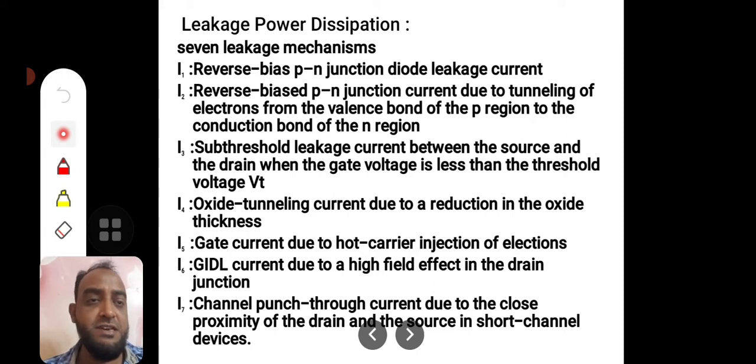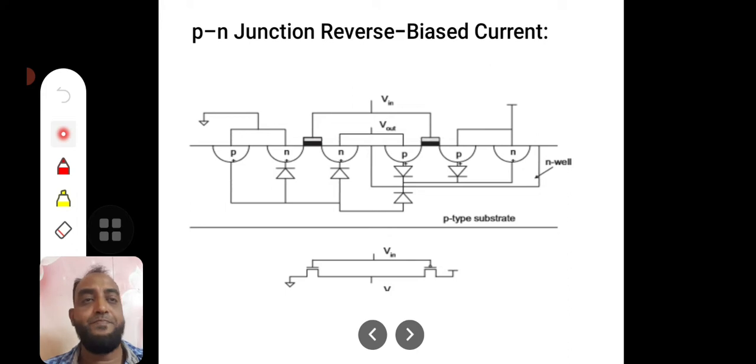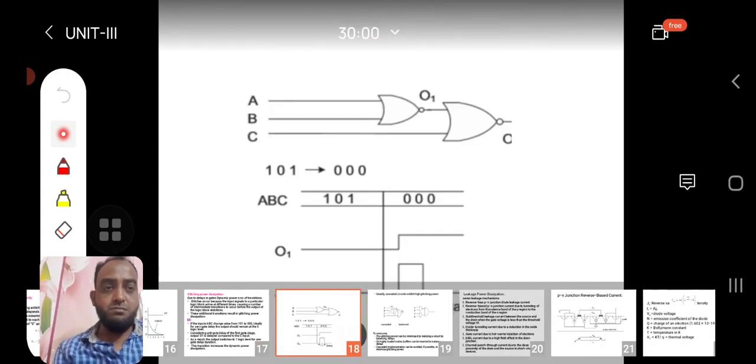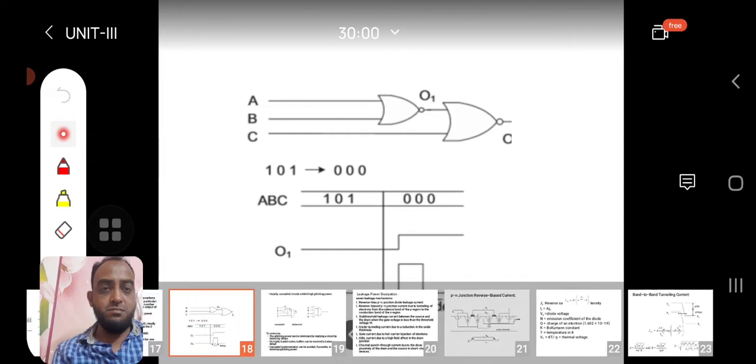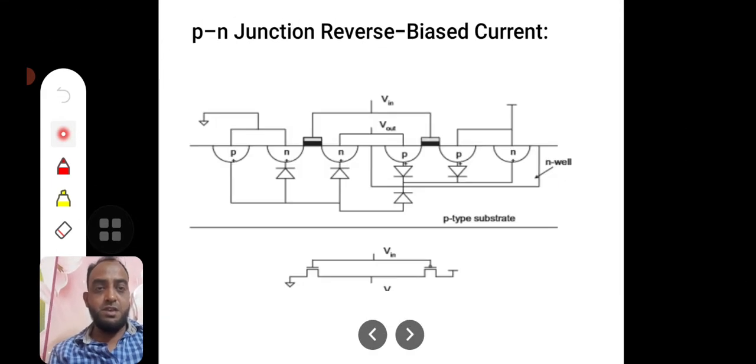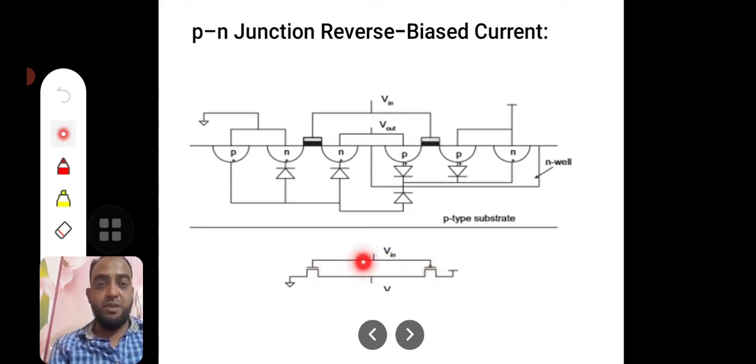We will discuss one after the other in the coming slides. You can see here, this is an N-well process CMOS inverter. The drain of the P-device is connected to supply voltage, and the source of the N-device is connected to ground. Both the inputs, both the gates are tied together to apply input voltage.